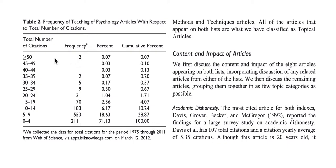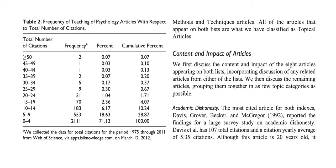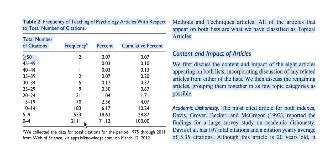From 0 to 4, there are 2,111 articles. There are 553 with 5 to 9 citations, and 183 with 10 to 14 citations. The number of papers with 50 or more citations, there are 2 of them. What if the question asks how many papers have less than 10 citations? You locate where 10 is and add 553 and 2,111, which gives you 2,664. If asked for the percentage, you sum them up and divide by the total number — the sum of all frequencies. So it's 2,664 divided by that total number.